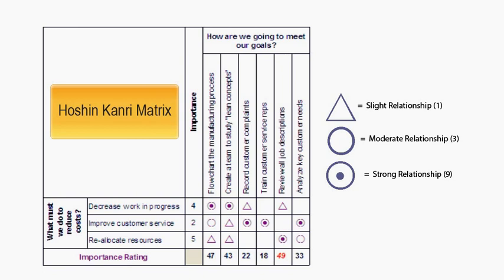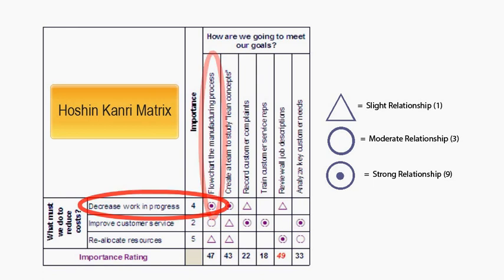The overall objective or need for this matrix is to reduce costs. Looking at the first what: decreasing work in progress has been given an importance rating of 4. The strength of the relationship between decreasing work in progress and flow charting the manufacturing process is strong, so the intersecting cell has a 9 rating — you see a fisheye in the cell. 4 times 9 is 36, so the cell now has the numeric value of 36.